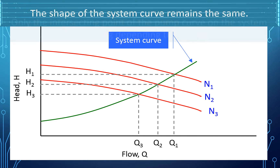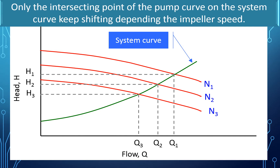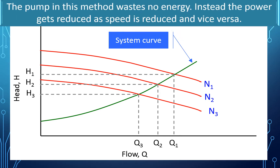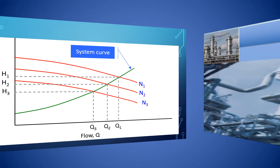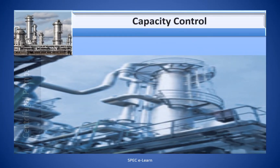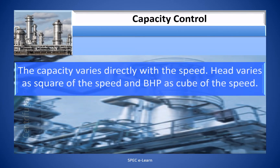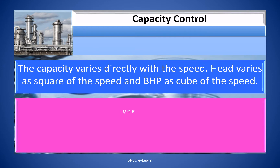The shape of the system curve remains the same. Only the intersecting point of the pump curve on the system curve shifts depending on the impeller speed. The pump wastes no energy in this method; instead, the power gets reduced as the speed is reduced and vice versa. The capacity varies directly with the speed, head varies as the square of the speed, and BHP varies as the cube of the speed.